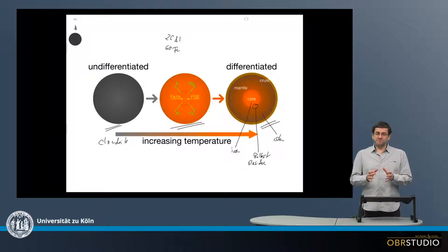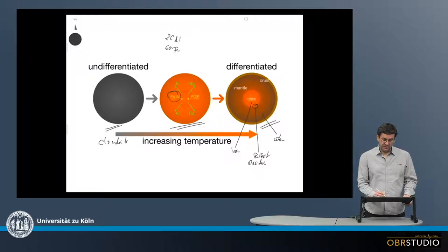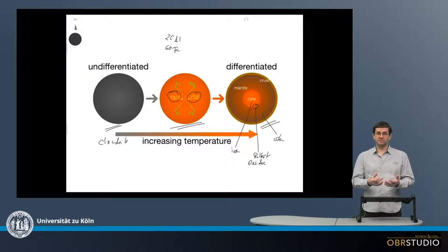And when the differentiation happens, then all the siderophile elements, something like iron and nickel, and the platinum group elements, partition into the core. And the lithophile elements, silicon, magnesium, aluminum, calcium, they retain in the crust, or the mantle, it's basically a mantle, because these are the lithophile elements.